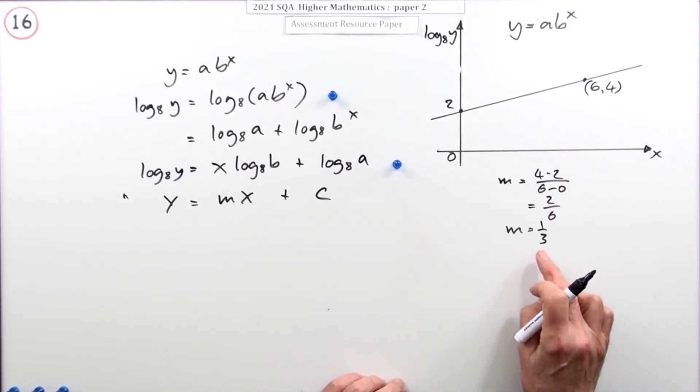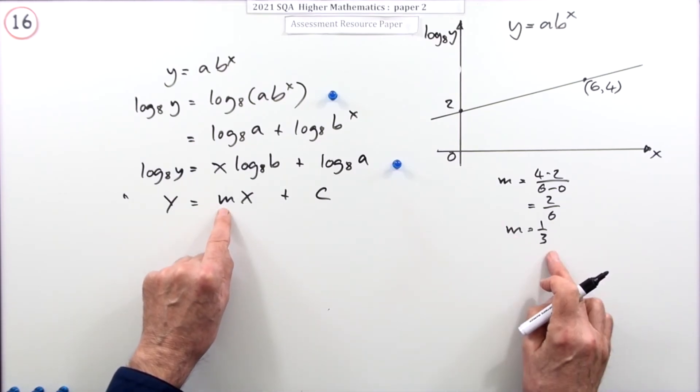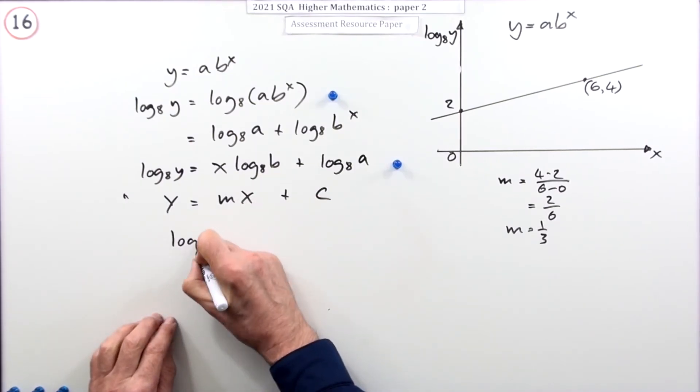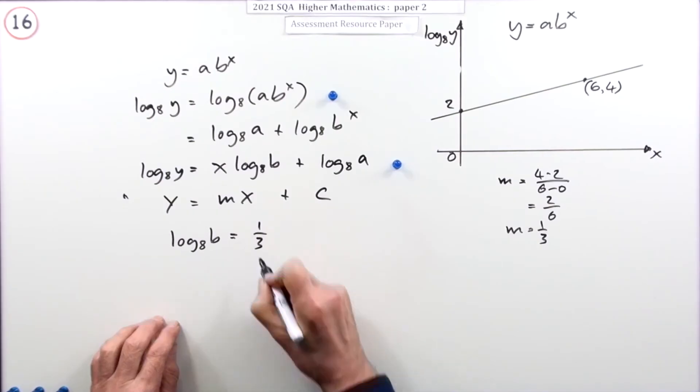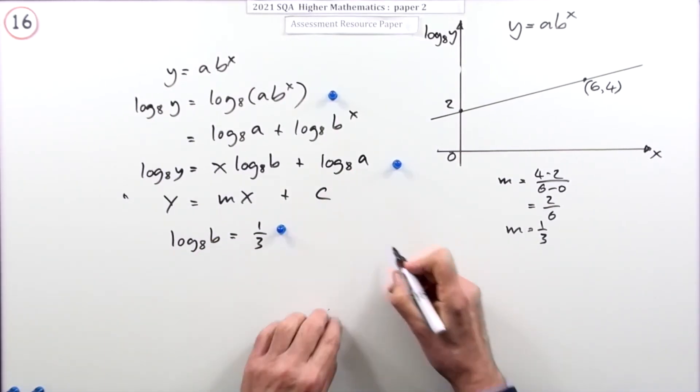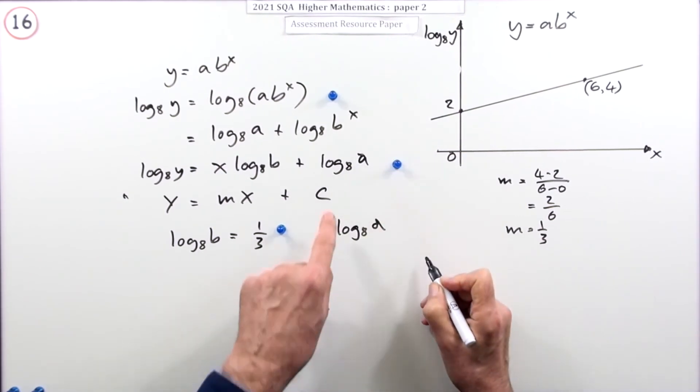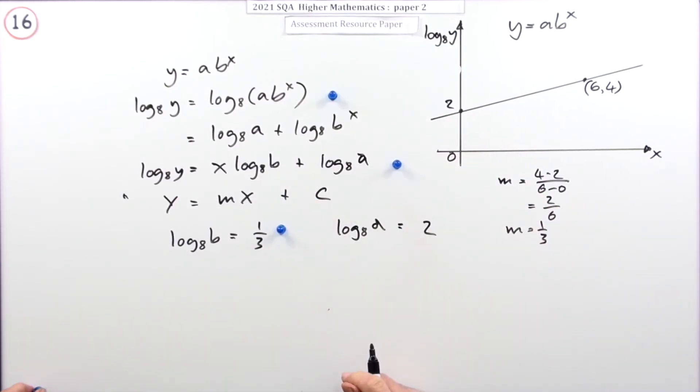Bring it over, it would be. So, here I can say, well, that m should be a third. Now, that m is that log base 8 of b. So, now I can say, log base 8 of b is a third. That'll be worth the mark. And, what I can say here is, that log base 8 of, that's an a, is a 2. That's worth a mark.